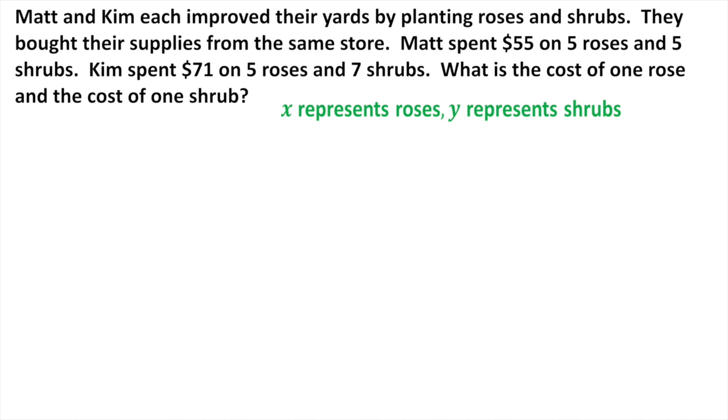So if I'm going to do this one, let's talk about Matt's first. Matt, 5 roses, so 5x plus 5y equals 55 because he spent $55 on 5 roses, 5 shrubs. Now then let's do Kim. Kim, 5 roses, so 5x plus 7y equals 71. Now that I have this, I can use elimination to solve this. So I want you to go ahead and do that now. If you're not sure how to use elimination, this video won't help you much there. Go back and watch a previous video that I've got under solving systems of equations that will show you how to solve each one in detail. But go ahead and push pause now. I want you to finish solving these ones.